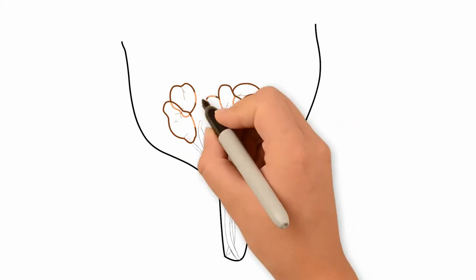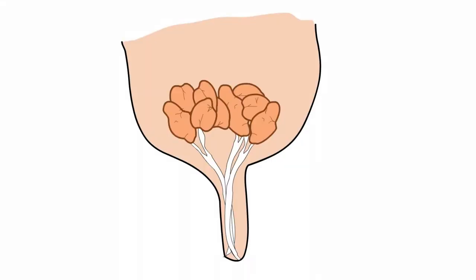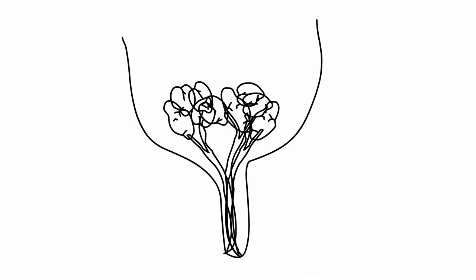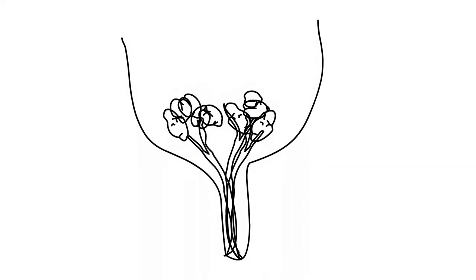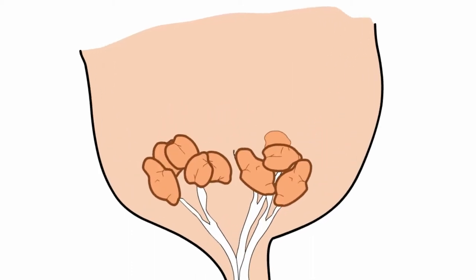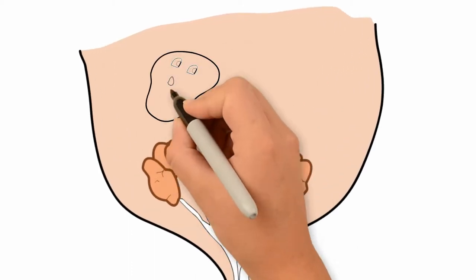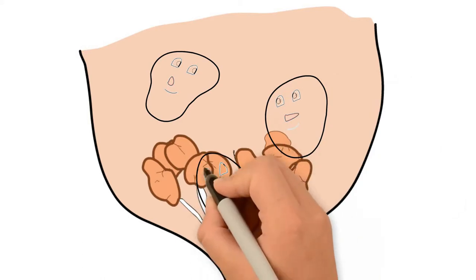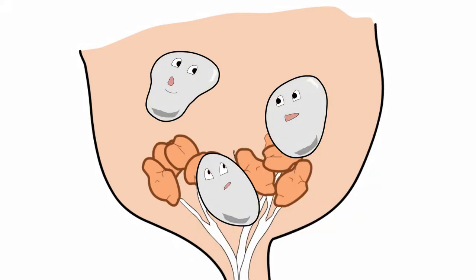This process is characterized by the reorganization and decrease in size of secretory cells and tissues of the mammary gland as they are replaced by non-secretory tissue. Involution is facilitated by the cells of the immune system that migrate to the mammary gland and digest the tissues.